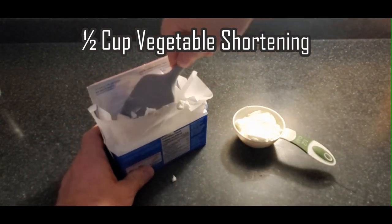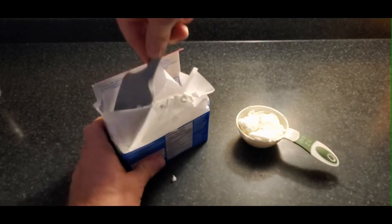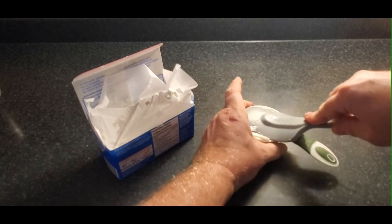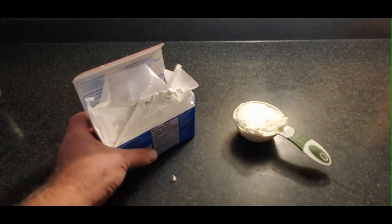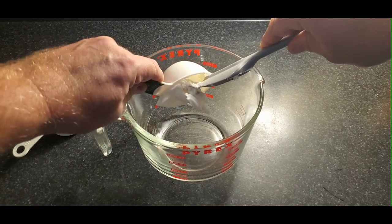Half a cup of vegetable shortening. You don't want to use lard that's based on animal fat because we want this to be shelf stable. Put that in a half cup measurement and then transfer it to a mixing bowl.